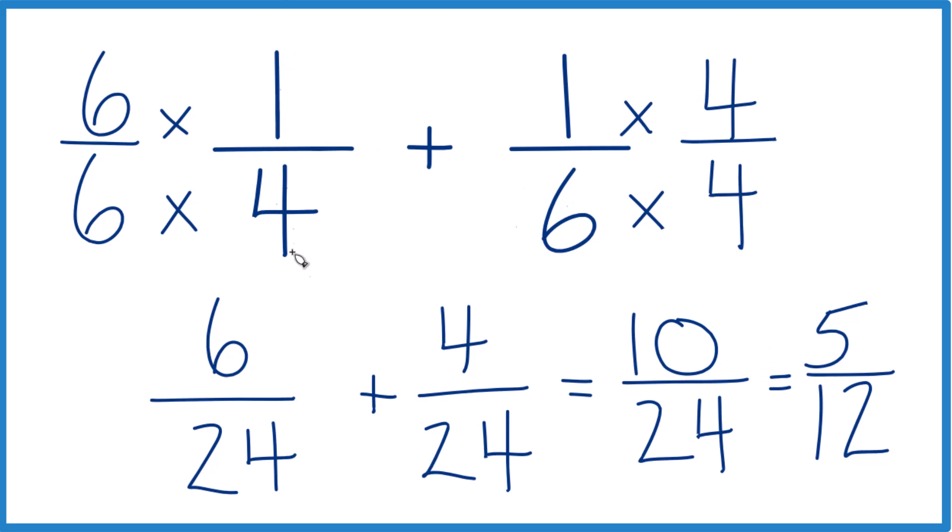So in answer to our question, one-fourth plus one-sixth equals 5 twelfths.